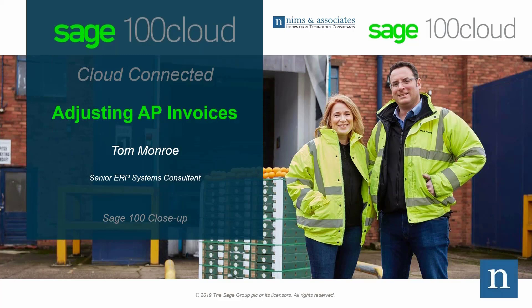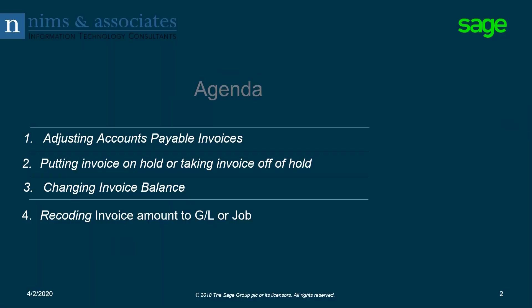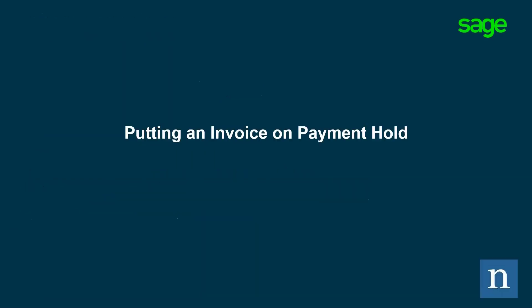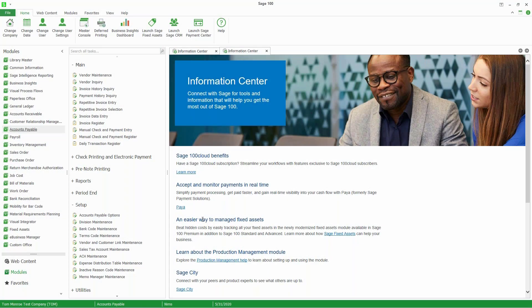Thank you very much for joining us today. Today we're going to talk about how to adjust accounts payable invoices in Sage 100 Cloud. Let's take a look at our agenda. We're going to discuss how to put an invoice on hold or take it off hold, how to change the balance of the invoice, and how to recode the invoice to a different general ledger account number or to a different job.